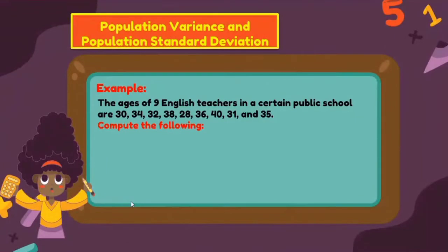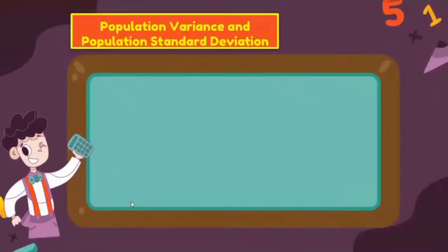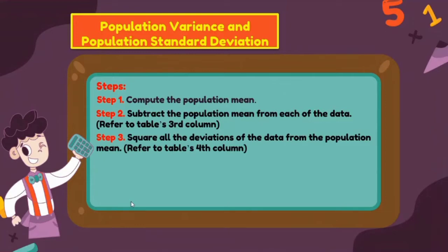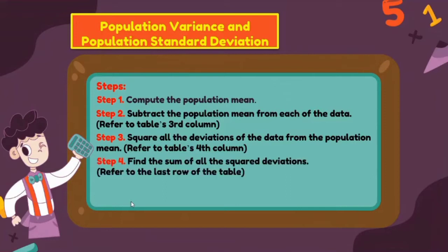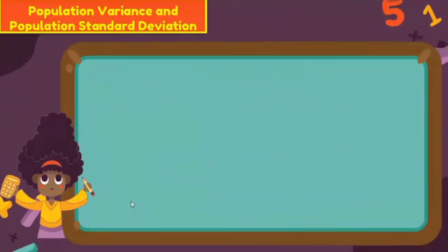Example: the ages of nine English teachers in a certain public school are 30, 34, 32, 38, 28, 36, 40, 31, and 35. Compute: (a) the population variance and (b) the population standard deviation. Steps: Step 1 — compute the population mean; Step 2 — subtract the population mean from each data value; Step 3 — square all deviations; Step 4 — find the sum of all squared deviations; Step 5 — solve for population variance; Step 6 — solve for population standard deviation.